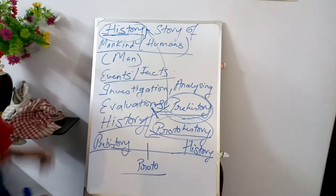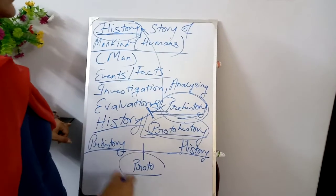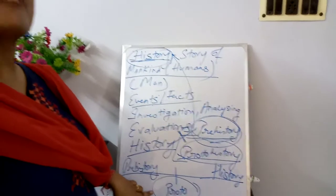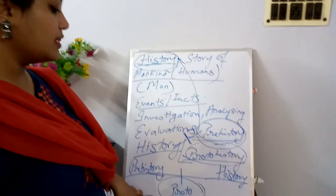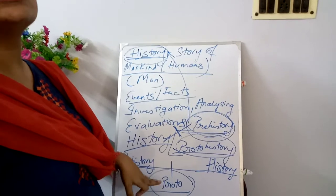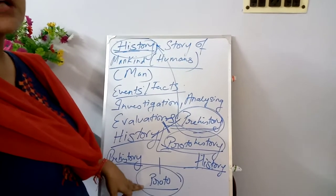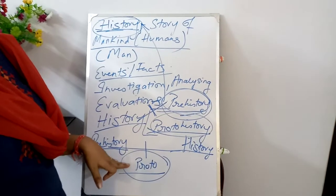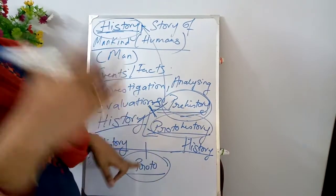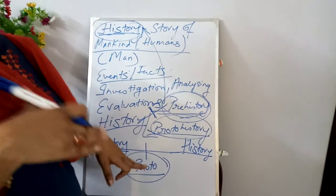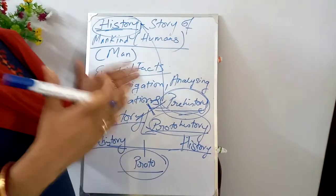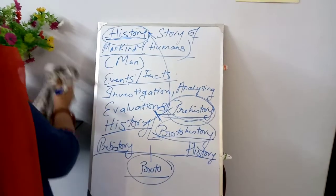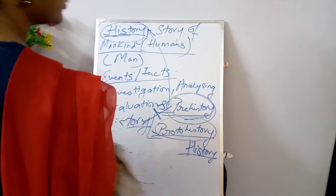Why is it called proto-history? It is believed that in this period, people may have had knowledge of writing, but the written materials have not yet been deciphered. Maybe the people were illiterate or they had no knowledge of writing, or the materials have not yet been deciphered. This is what is called proto-history.